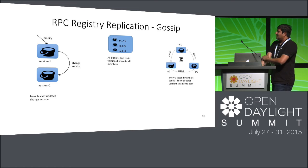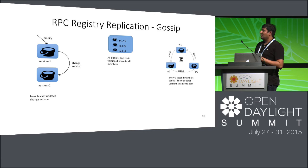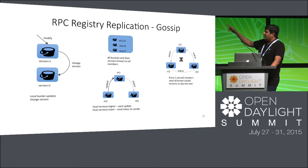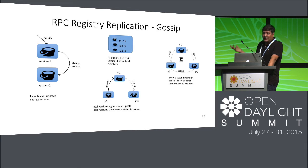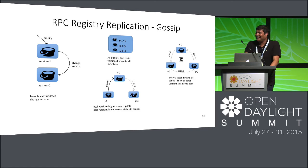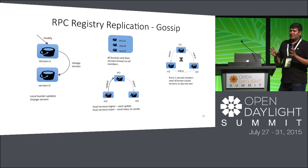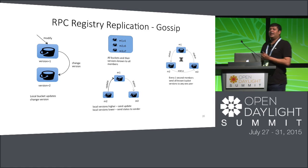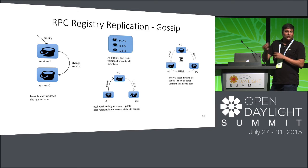The gossip mechanism works like this: every second, all members send status messages to each other telling which versions of the buckets they know about. Each node has bucket information for all the other nodes — for example, member one knows it has version one for itself, version five for member two, version seven for member three. Based on that, nodes can request newer versions. If you have a newer version of an object, you send it over. If you have an older version, you request it from the other node.